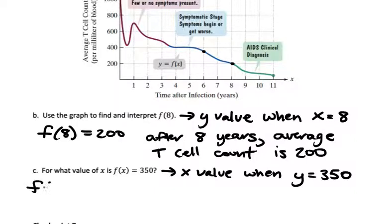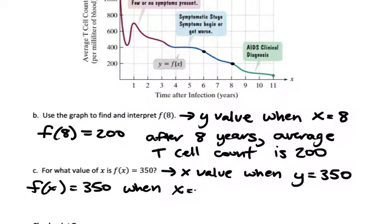It looks like it meets right about here, which is when x equals 6. So f of x equals 350 when x equals 6. Or in other words, after 6 years, the average T-cell count is 350.